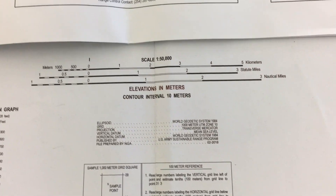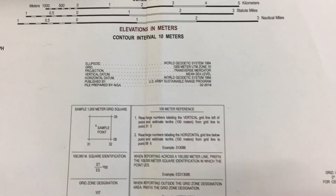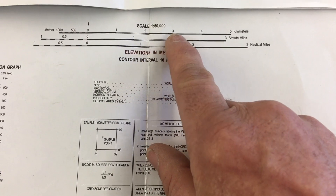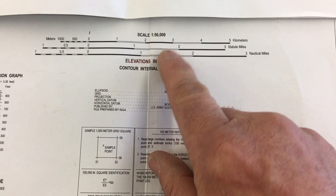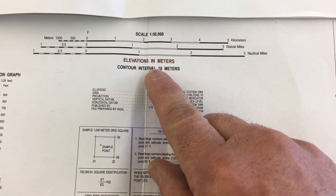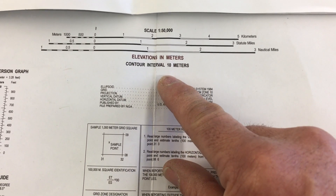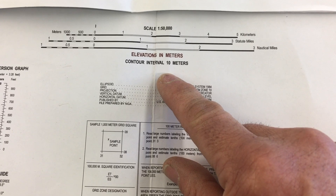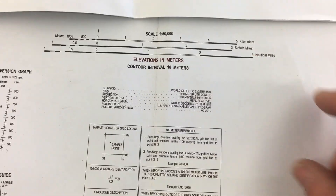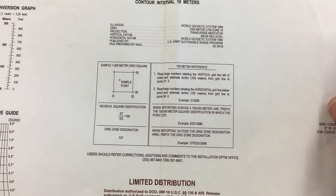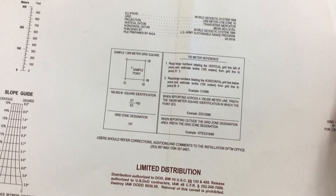Sliding back down to the Washington State map, we have the exact same information — scale again at 1 to 50, elevations in meters, contour interval of 10 meters, and the same grid zone designation information.